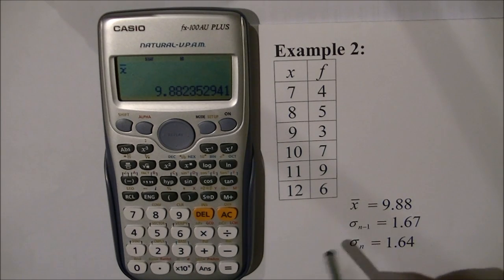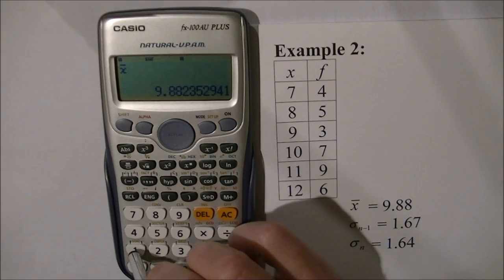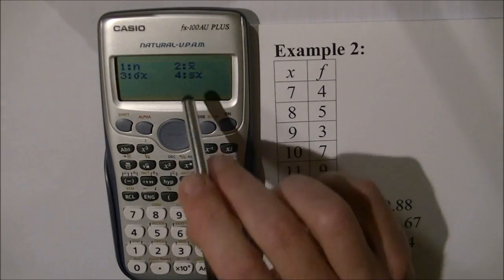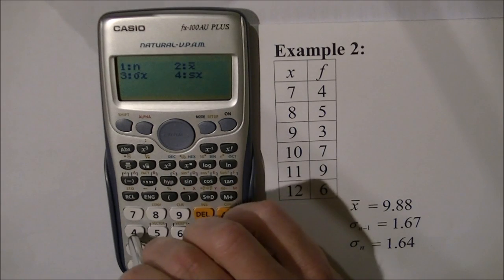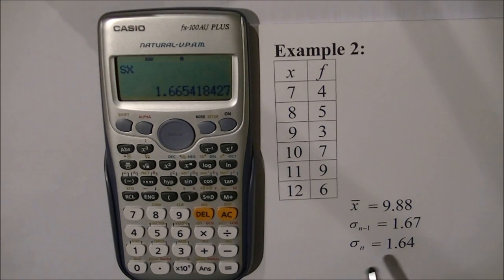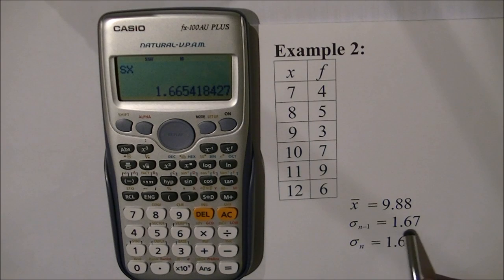For the sample deviation, press SHIFT 1, 4. I want the sample deviation, which is option 4. The answer is 1.67, rounded.